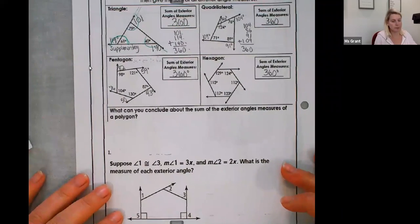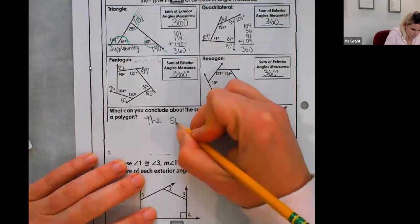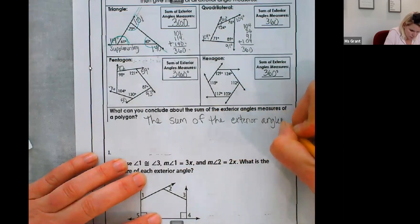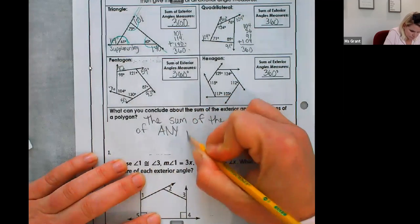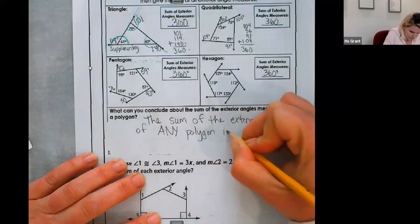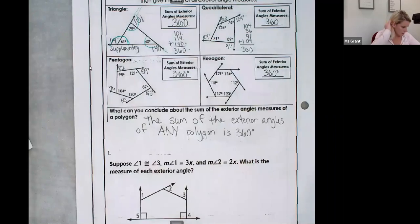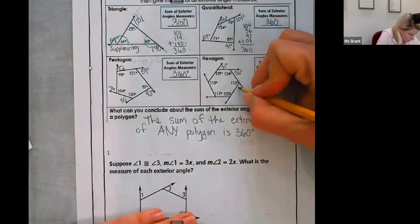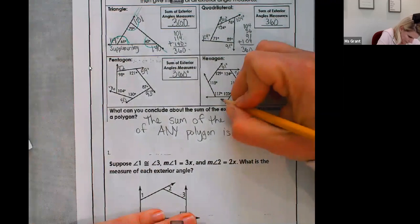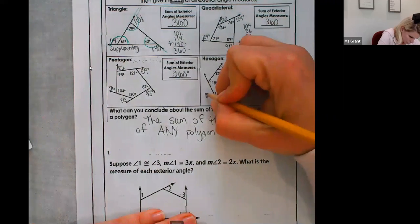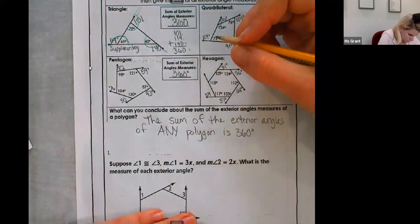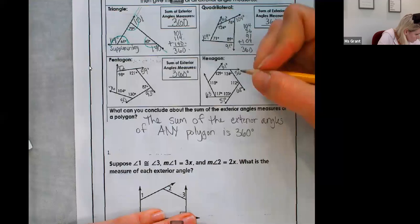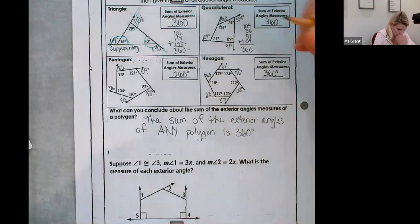Now what can you conclude? The sum of the exterior angles of any polygon is 360 degrees. No matter how many sides it has. I'll fill in the hexagon.